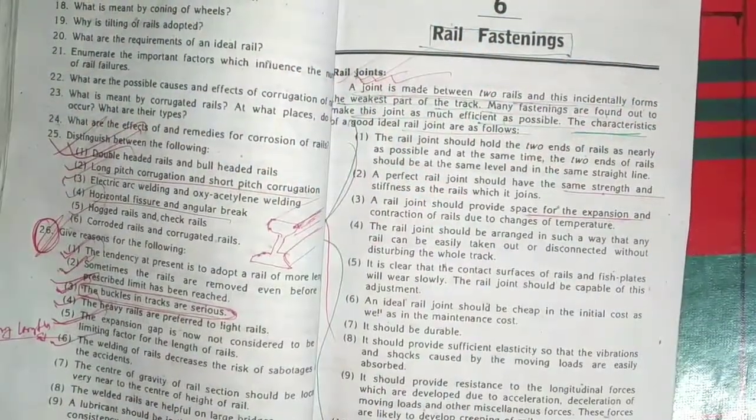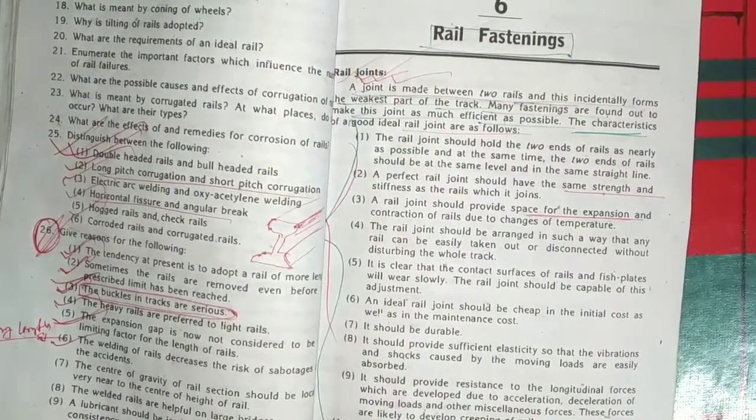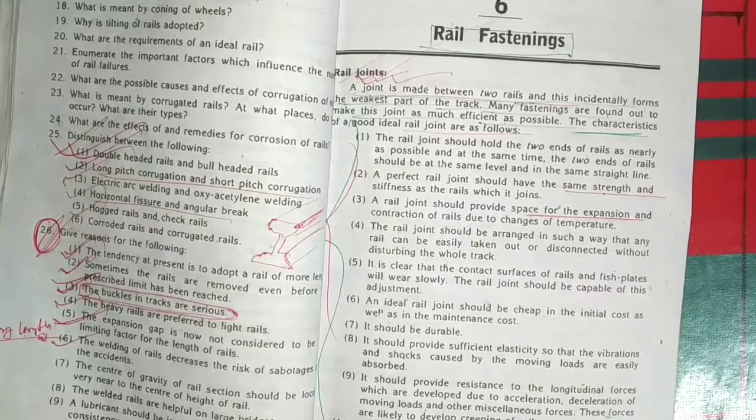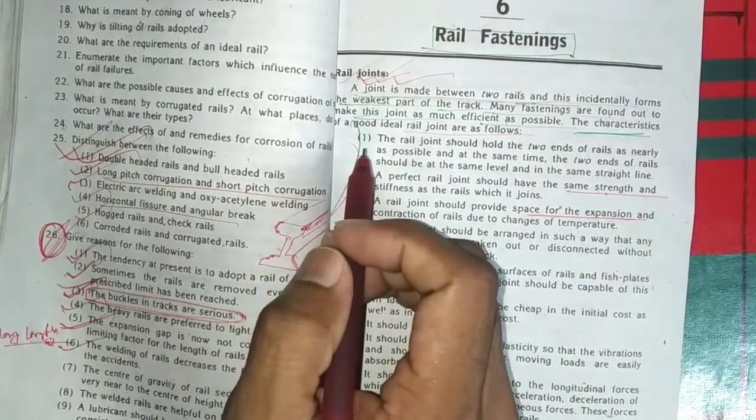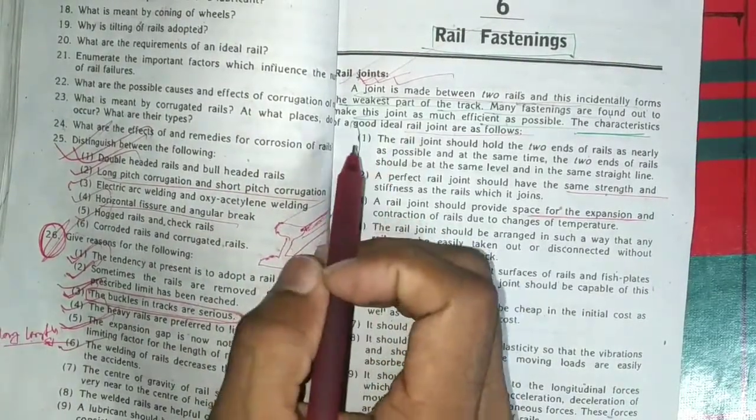Dear guys, today I am going to teach you rail engineering. This is about rail fastenings and rail joints. The rail joint is the fastening of the rail joint.